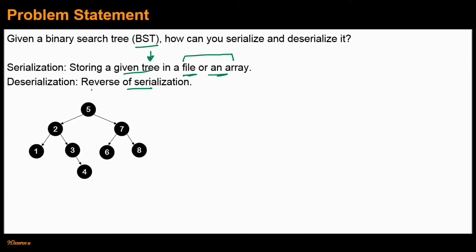Now let's understand this using an example. Our input is a binary search tree and we want to serialize it — that is, store this BST in a file or array. What we can do is perform a pre-order traversal of this BST and store the result in an array. In pre-order traversal, we first visit the root node, then the nodes in the left subtree, and finally the nodes in the right subtree.